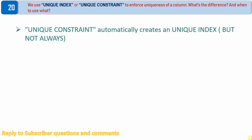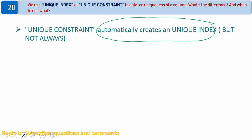The first point is, whenever we create a unique constraint on a column, Oracle automatically creates a unique index. So the underlying concept is there is an index behind the scene which ensures or enforces the uniqueness of the column. But I want to stress one more point — but not always. That means it's not necessary that Oracle always has to create a unique index. Let us understand this better with two examples.